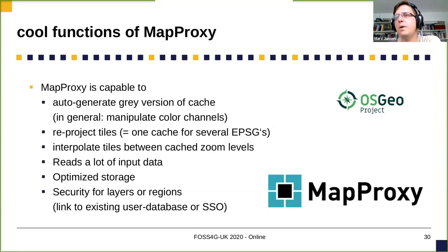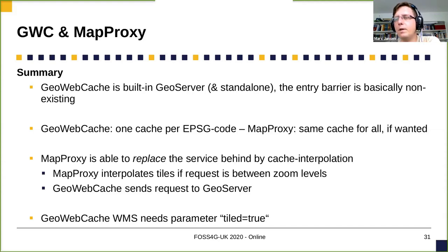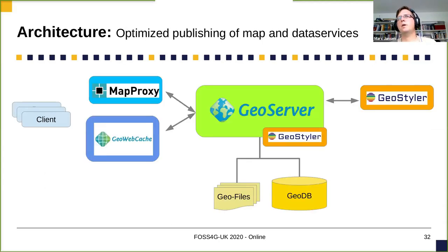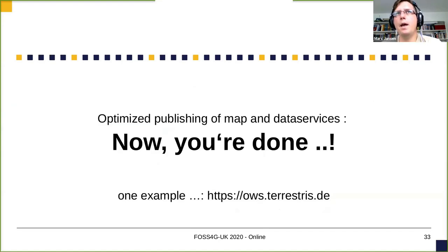Some of these functions are also done by GeoWebCache, but it's also about how you like to use software. Comparing the two: GeoWebCache is built in and the entry barrier is basically non-existent — if you have GeoServer you can also try GeoWebCache. But please try also MapProxy, because it has some advantages too. A usual architecture looks like this: you have geo files in a geodatabase, then GeoServer does the hard work with GeoStyler helping to make maps look good, and then either MapProxy or GeoWebCache sits in front to produce fast maps.